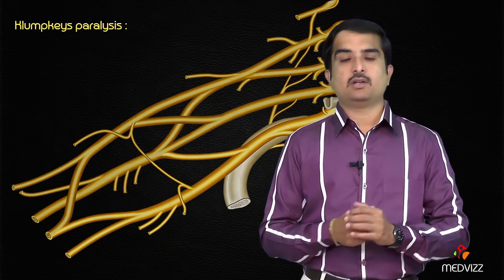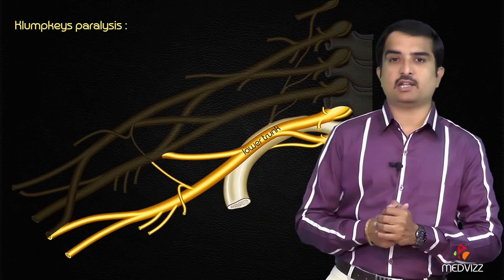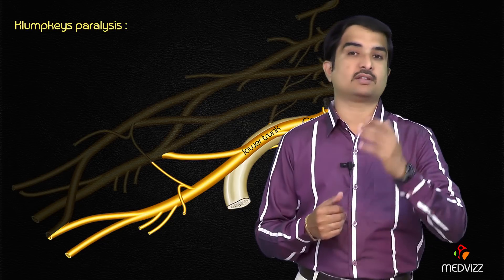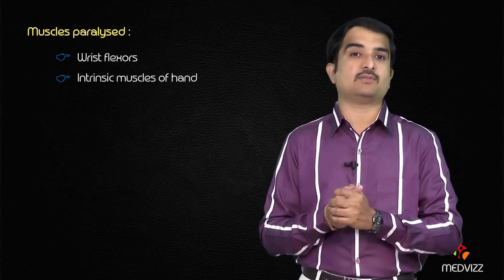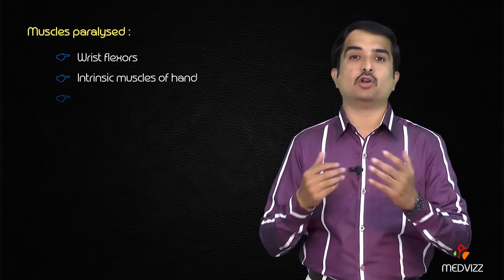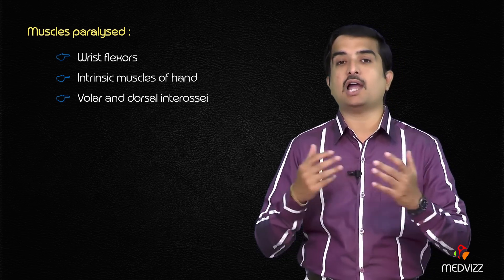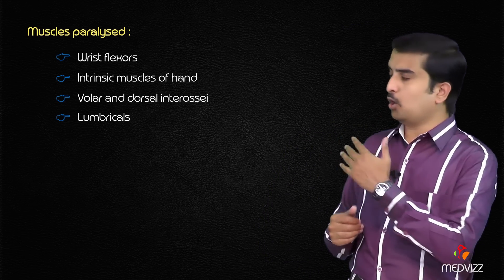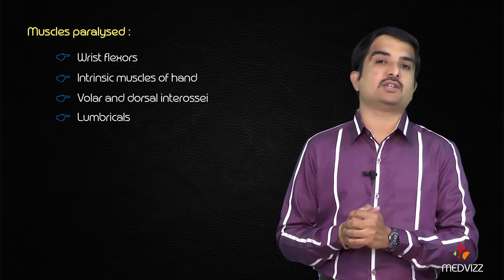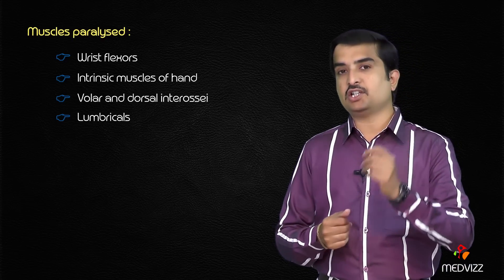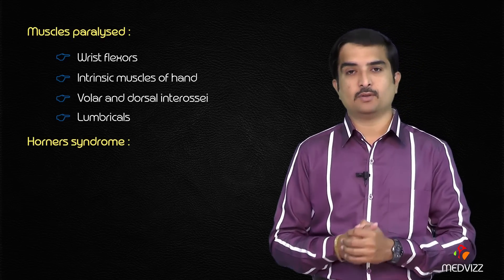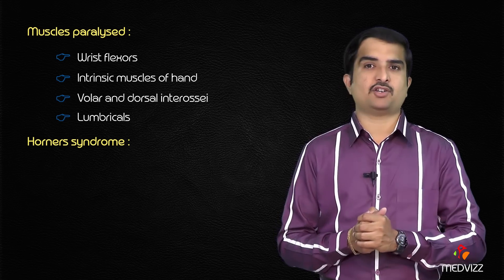Klumpke's palsy is caused by a lesion of the lower trunk of the brachial plexus — C8 and T1. It mainly affects wrist flexors and the intrinsic muscles of the hand, including the thenar and hypothenar muscles, the dorsal and volar interossei, and the lumbricals. Injury of C8 and T1 may also involve the sympathetic trunk or ganglia, leading to Horner syndrome with ptosis, miosis, and anhidrosis.